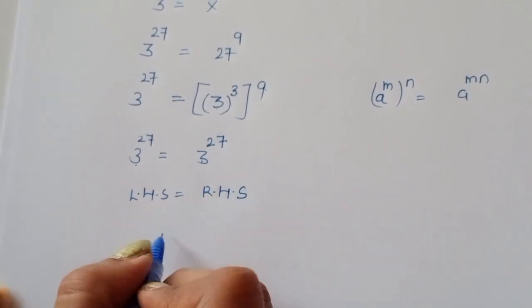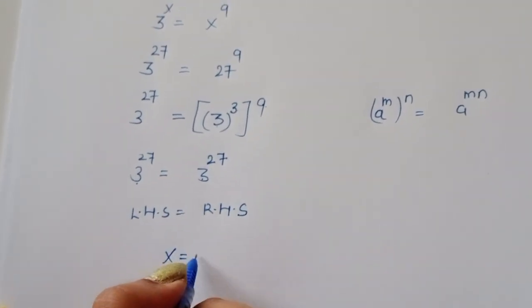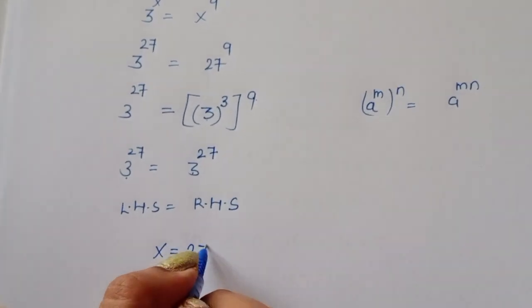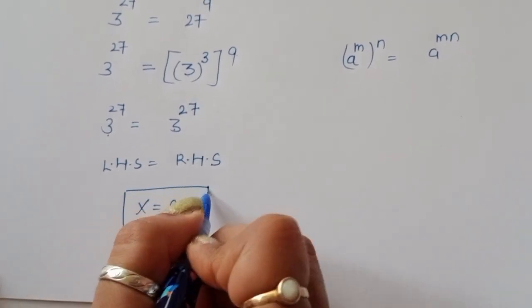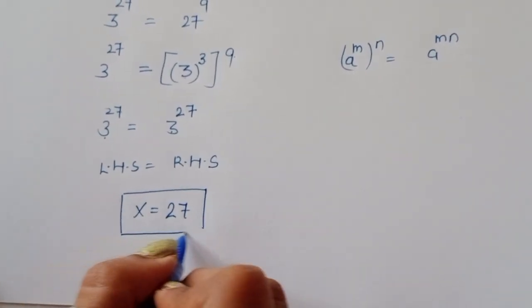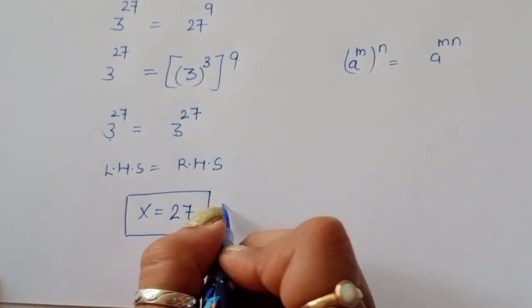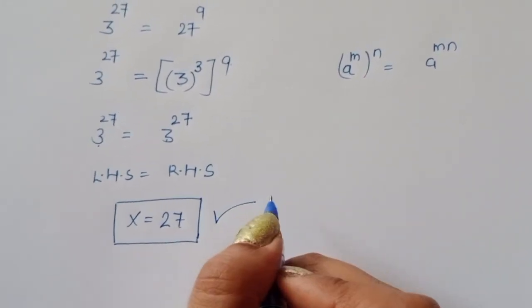So the value of x is equal to 27. This is the correct solution for this equation. Thank you.